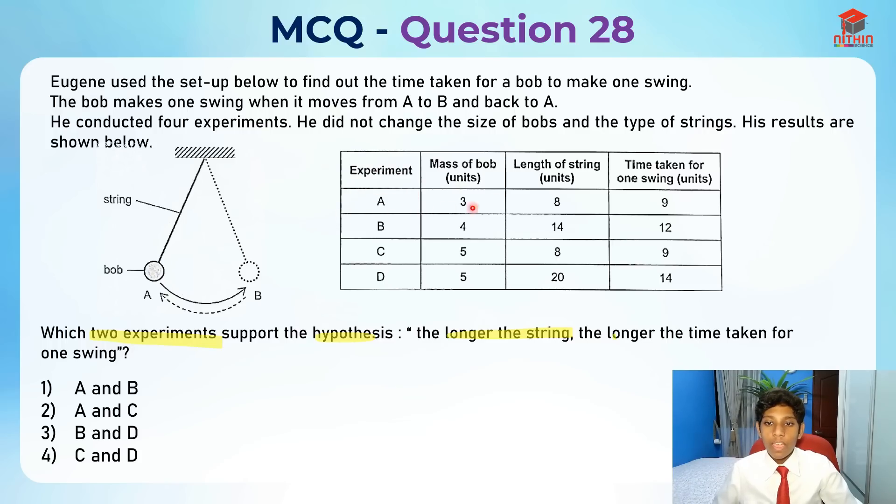Let's take a look at all the experiments first. Experiment A, the mass of the bob is three units, and the length of the string is eight. The time taken for one swing is nine units. For B, the mass is four units, and the length of the string is 14 units. The time taken for one swing is 12 units. These two experiments can't be the right one because the mass is already different.